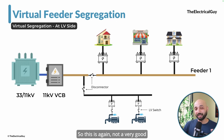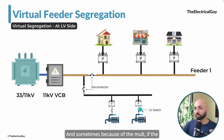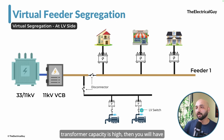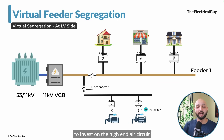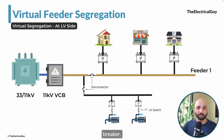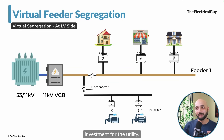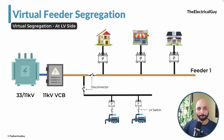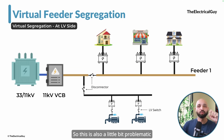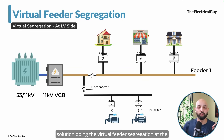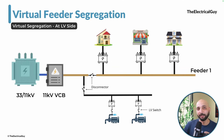However, this LV-side solution is not perfect either. We are still dependent on disconnectors, which are off-load devices, so for maintenance you still have to open the vacuum circuit breaker and disconnect all loads. Also, if the transformer capacity is high, you will need to invest in high-end air circuit breakers, which again increases the capex investment for the utility.